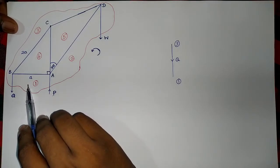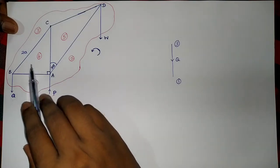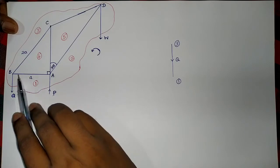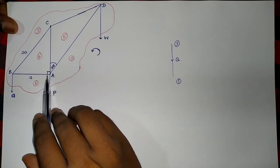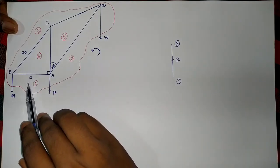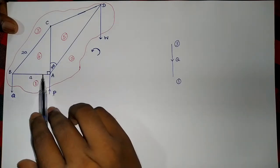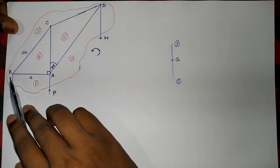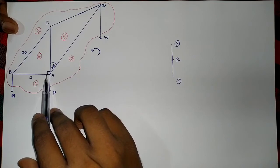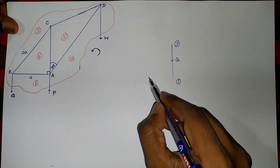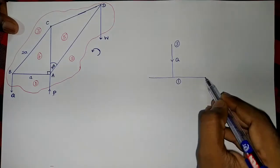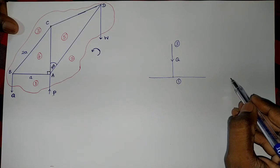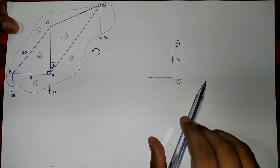Now we are in region one. If I rotate anticlockwise, I want to enter into region four passing this rod — that means passing this stress. The rod is placed horizontally, so from one to four the force is horizontal. We don't know whether it is to the left-hand side or right-hand side, so we keep that horizontal line.